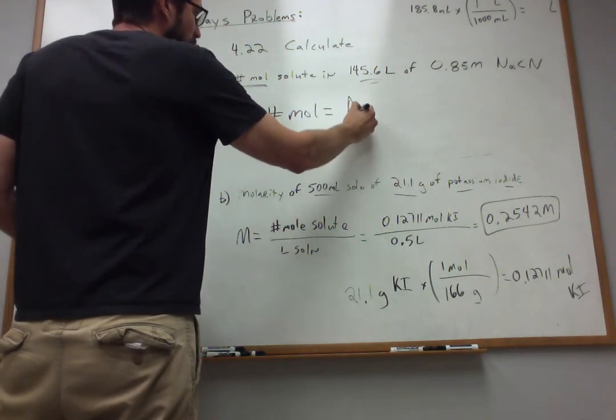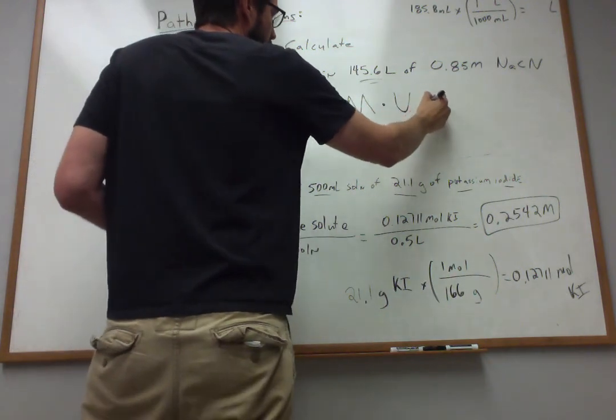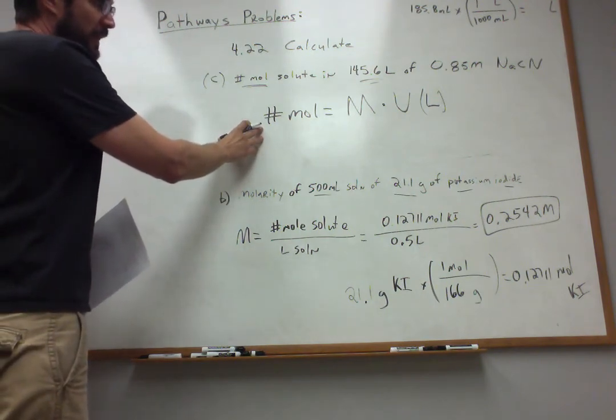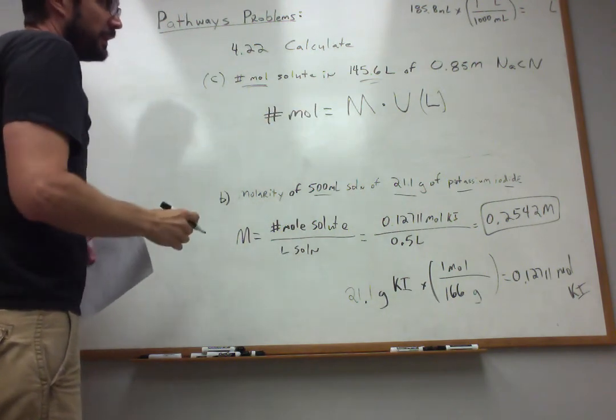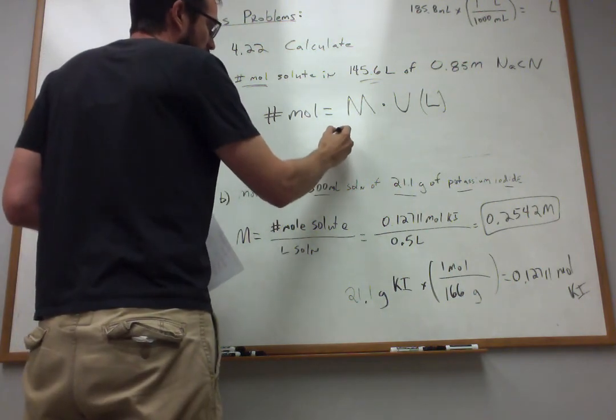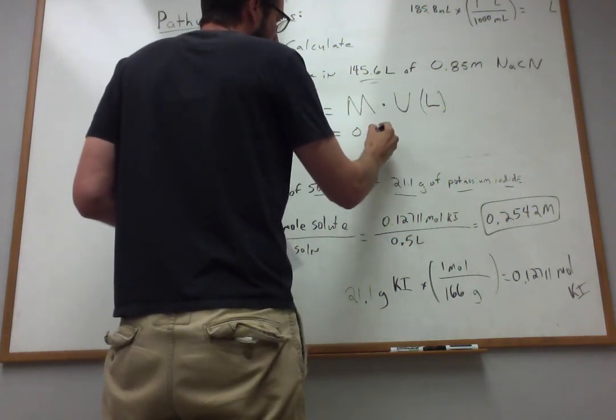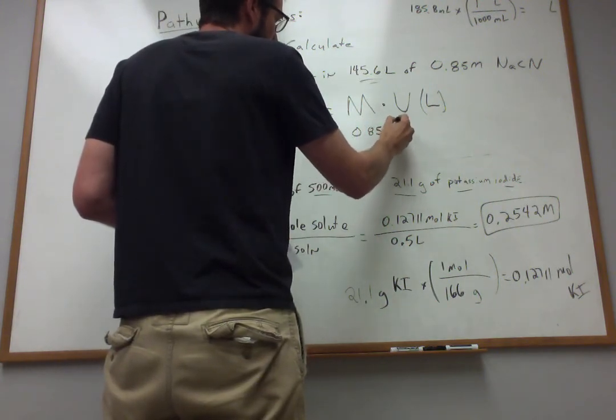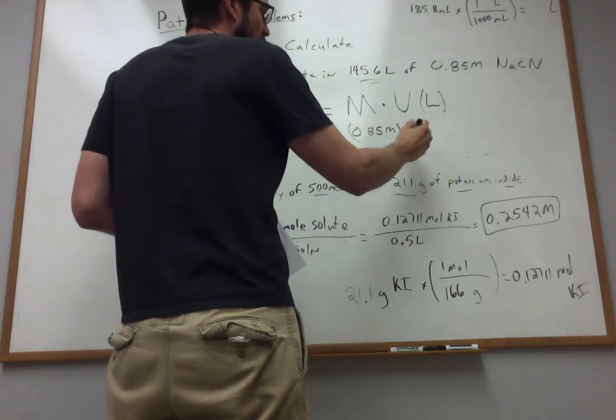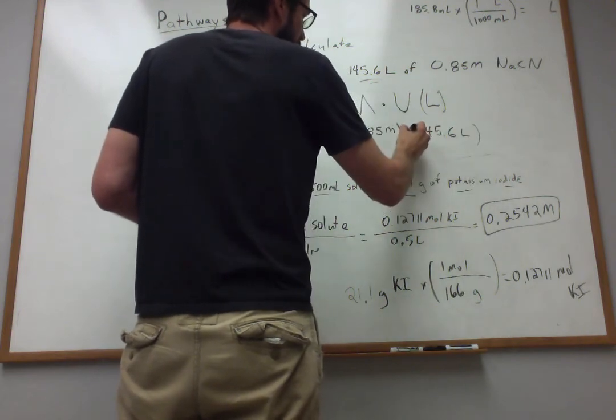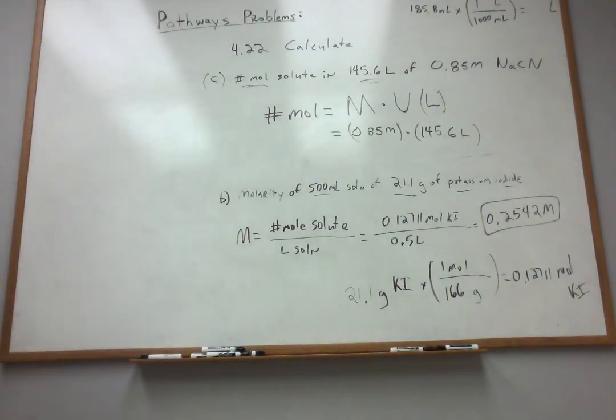Remember earlier I told you the importance of this equation? That for solution stoichiometry, the number of moles of the solute can only be found by multiplying the molarity times the volume in liters. So this becomes a pretty straightforward problem if we can remember this because we're given all the information we need. We're told that we have 0.85 moles per liter as a concentration. We're also told that we've got 145.6 liters. Quite a formidable volume, right? It's already in liters, so that's good to go. The other number is in moles per liter. So the units work out when we get moles.